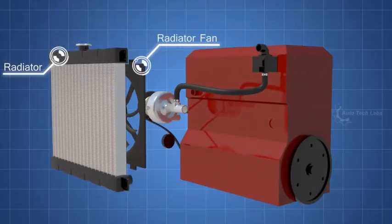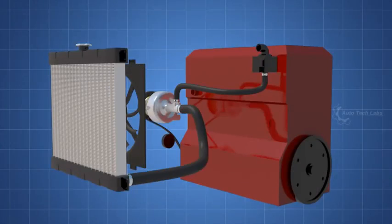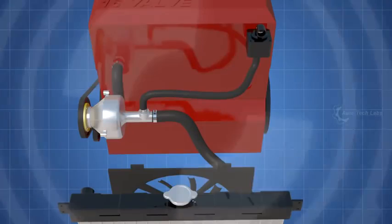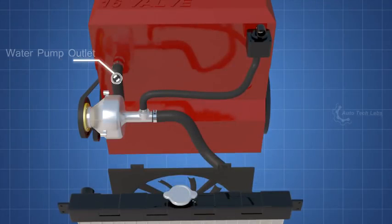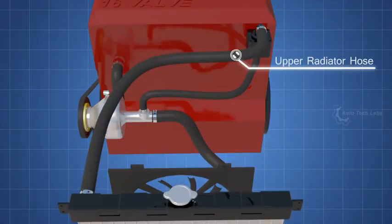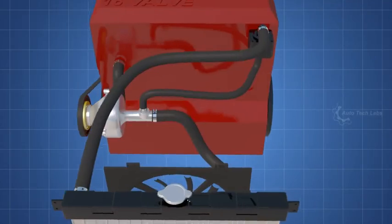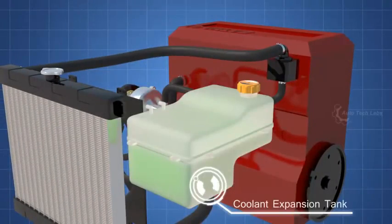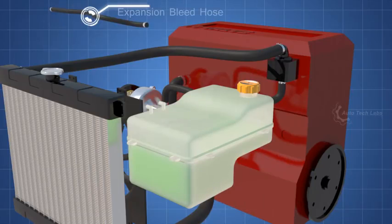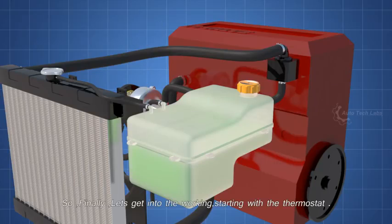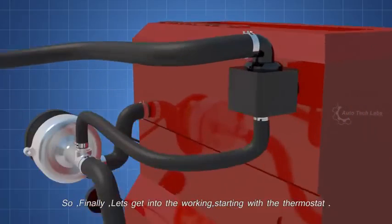The radiator and the radiator fan. The lower radiator hose. The water pump outlet hose. The upper radiator hose. The coolant expansion tank. The expansion bleed hose. Coolant overflow hose. So finally, let's get into the working, starting with the thermostat.